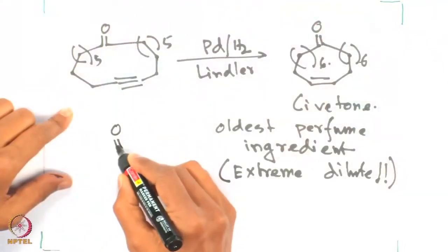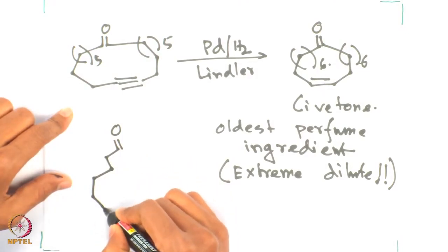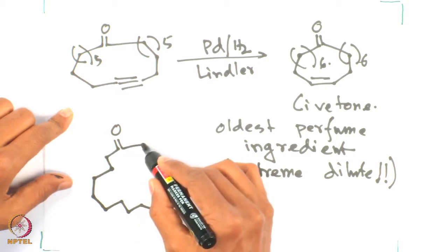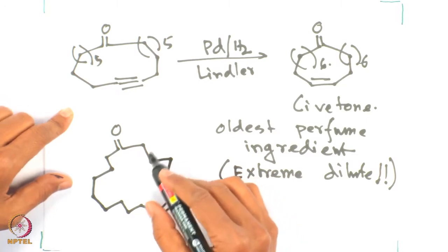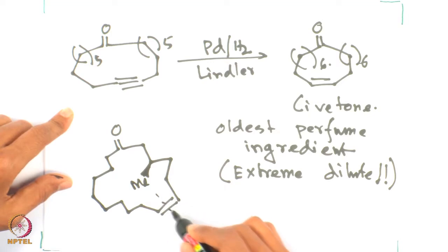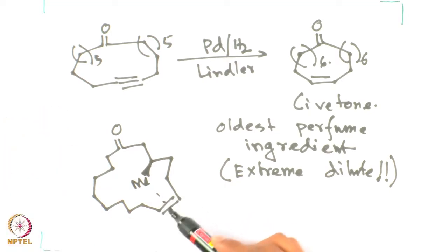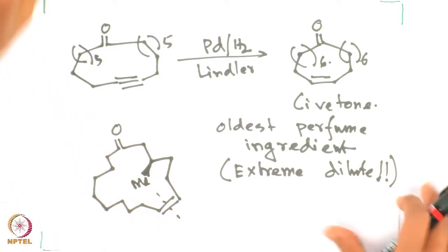Muskone can also be synthesized by a similar pathway as civetone, which is the world's oldest known perfume. Let us look at the structure of muskone — it is a ketone, a very interesting molecule. The olefin in muskone can be generated by utilizing a similar procedure. Overall, any large ring can be generated by ring closing metathesis: any terminal olefin or olefin at any position, or two alkynes, can be put together to form a new alkyne.